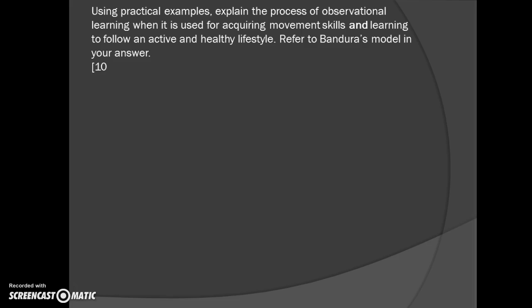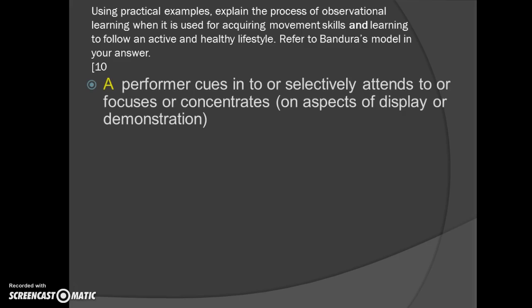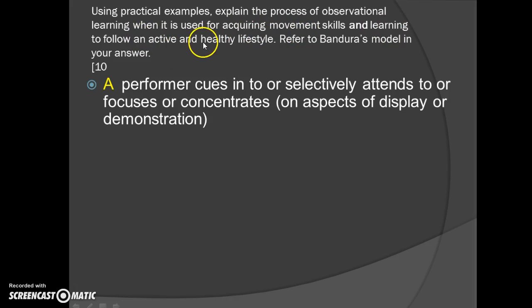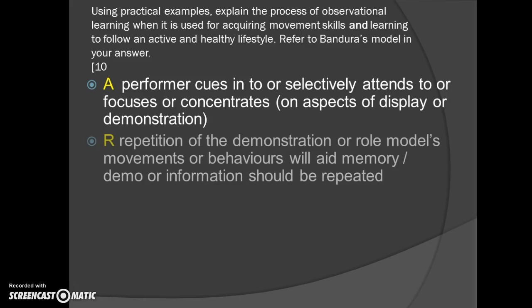Let's quickly look at that in a 10-mark question — just to give you an idea of how that would potentially fit in. Identify the subject qualifier, identify the command word. The key thing is it says 'refer to Bandura's model in your answer.' Using practical examples, explain the process of observational learning and what it's used for acquiring movement skills to follow an active and healthy lifestyle. A performer must selectively attend or focus on the correct cues. If you're talking about a balanced, active, and healthy lifestyle — are they focused on the person eating the apple or the person drinking the alcohol? That's how you could use that one.